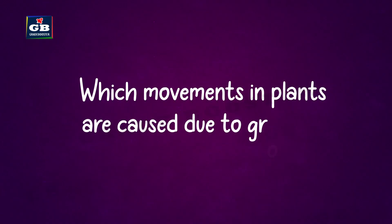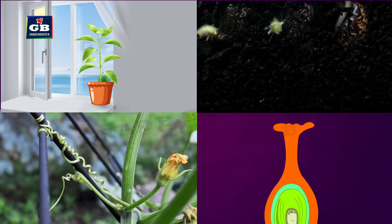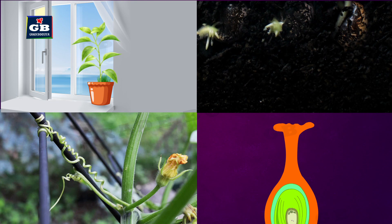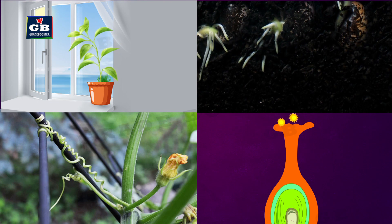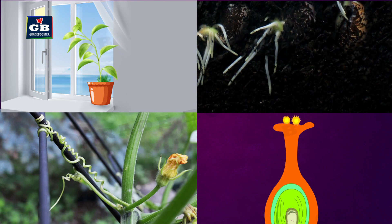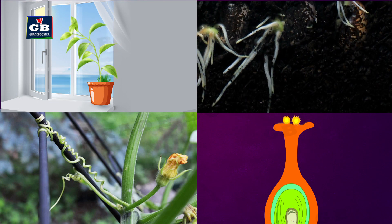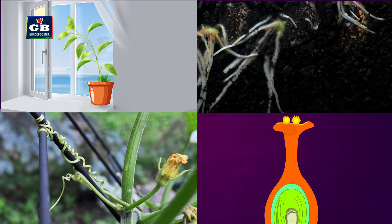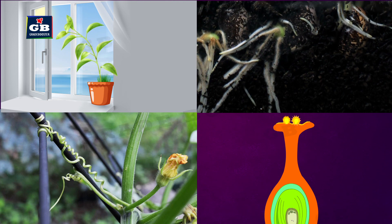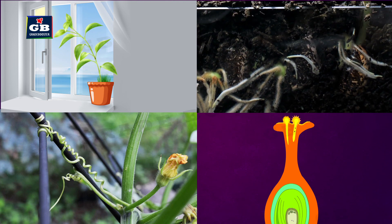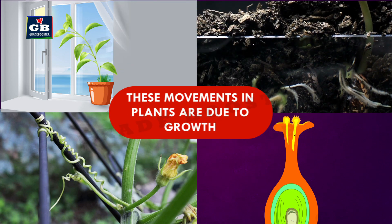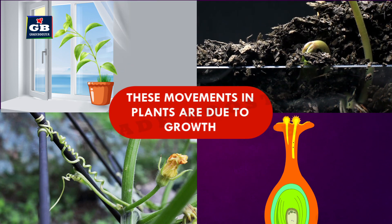Which movements in plants are caused due to growth? The movements in plant parts like stem moving towards sunlight, roots growing towards soil, tendrils coiling around some support, and pollen tube growing towards the ovule are caused due to growth.